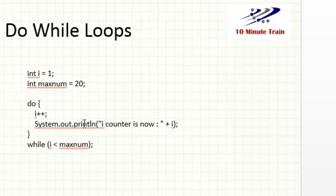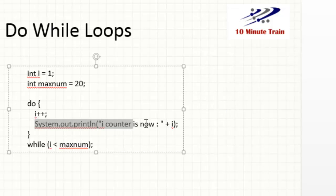In a do-while loop, we set the variable — in this case i — we set it to one, but then we set the maximum number, and here I'm calling it maxNum equal to twenty. Then we say: do this — increment it by one and print out 'i counter is now' followed by the variable i — do that any time i is less than the max number.